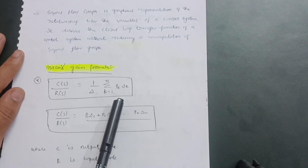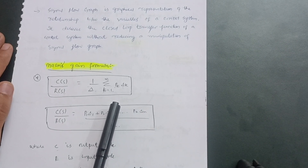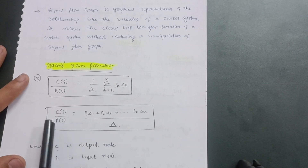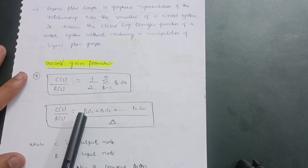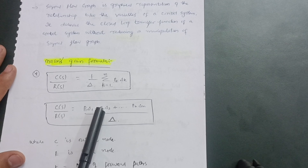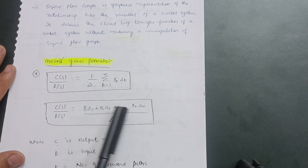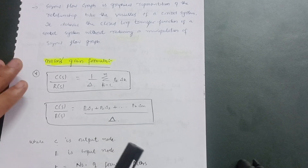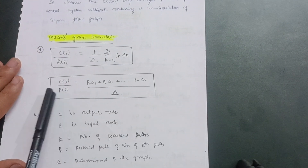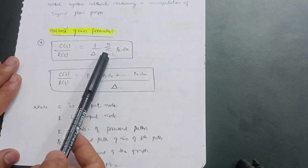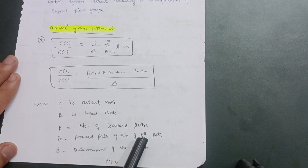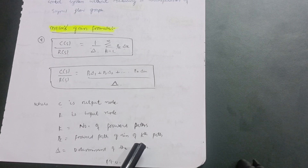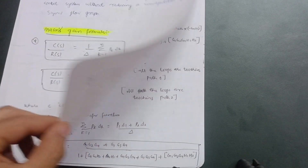Here, Pk and Δk will be explained in the problem. C is the output and R is the input. The variable k runs from 1 to n, where n is the number of forward paths. Pk is the forward path gain of the kth path. In the problematic part you will understand it better — so let us go to the example.